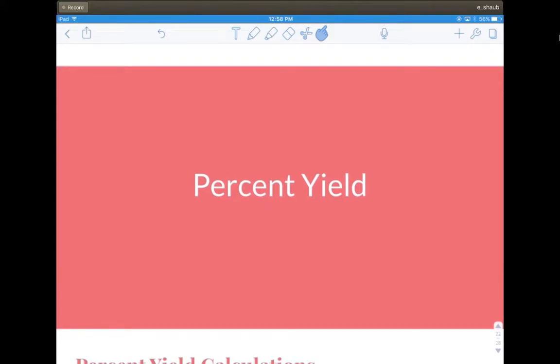Hi everybody, this is the final video for Unit 9 Stoichiometry with how to calculate percent yield using limiting reagents.